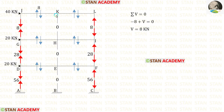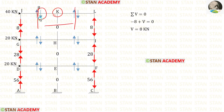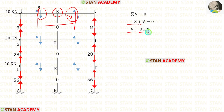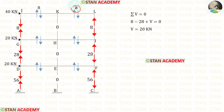Now let us take joint K. This force is acting downwards, so that will be positive. This force is acting downwards, so that will be negative. This force is acting downwards, so that will be negative. Let us keep the unknown shear force as V — it is acting upwards, so that will be positive. Finally, for V we are getting 8 kN. Let us apply that.